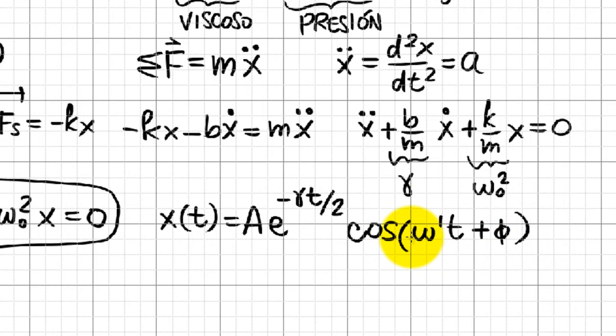Of omega prime t plus the phase constant, and this is primed because this angular frequency is different from omega zero, because the oscillator is slowing down. So omega prime is not the same as omega zero, in fact they are both related by this formula.